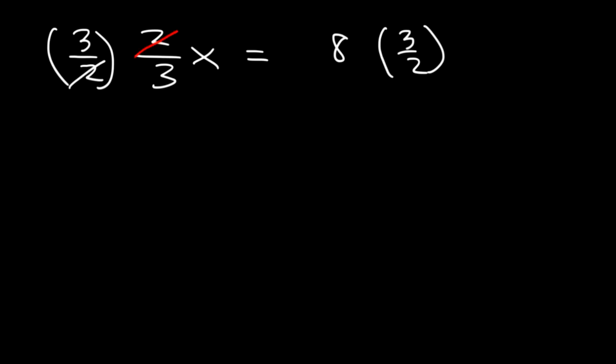And so notice that the 2's will cancel, and also the 3's will cancel as well. And so you're going to have x on the left side. Now what is 8 times 3 over 2?